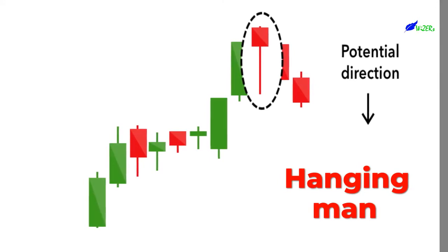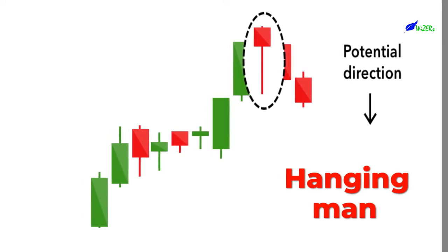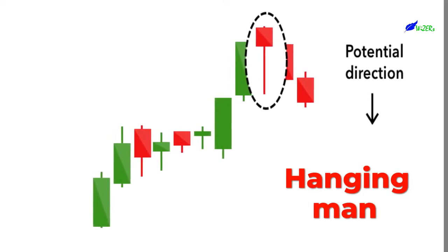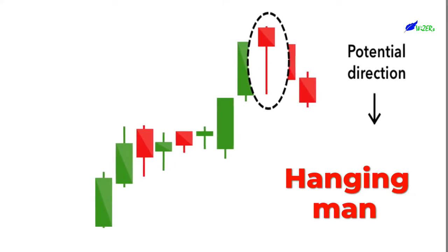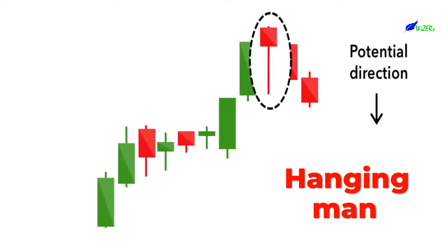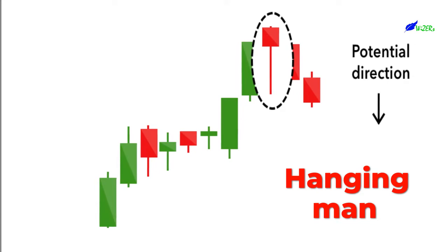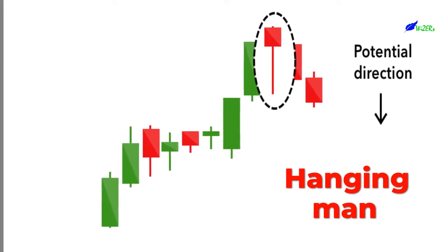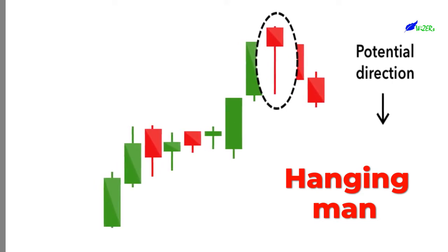The hanging man is the bearish equivalent of a hammer. It has the same shape but forms at the end of an uptrend. It indicates that there was a significant sell-off during the day, but that buyers were able to push the price up again. A large sell-off is often seen as an indication that the bulls are losing control of the market.